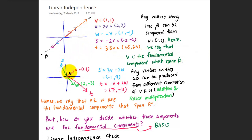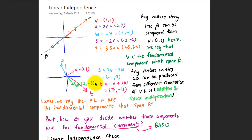In another case, where you have a two-dimensional space with two fundamental components, let's assume that v and w are two fundamental components of this two-dimensional space. You can use different combinations of vector addition and scalar multiplication to get any other vectors in this 2D space. For example, s can be obtained from three portions of v and negative two portions of w, and t from negative v and four portions of w. Hence, v and w are the fundamental components that span the R2 vector space.